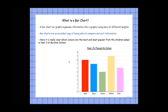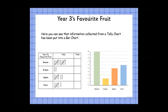So that's a bar chart. What we can also do is convert data or information from a tally chart into a bar chart — and that's normally the way we do it. We don't often change it from a bar chart to a tally. We start with our tally, which is really quick to gather information, and we put it into a bar chart.